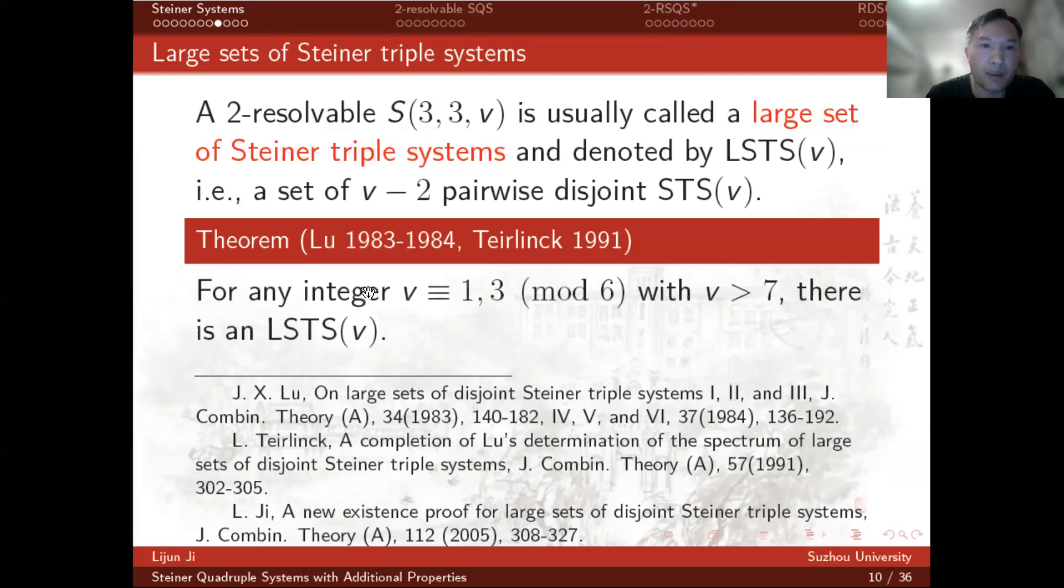We almost determined the existence of large sets of Steiner triple systems with six unsolved orders. In 1991, Teirlinck gave a completion. In 2005, based on three-wise balanced design, I gave an alternative existence proof of LSTS.